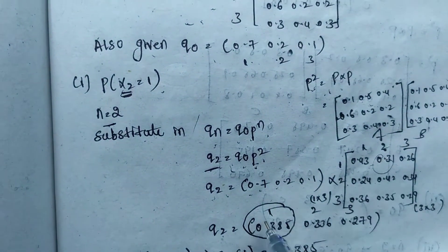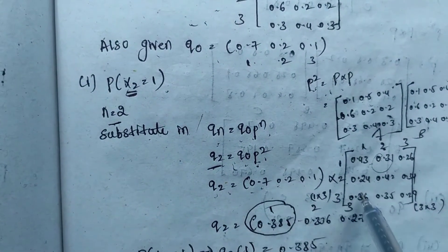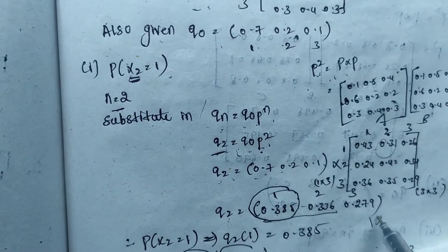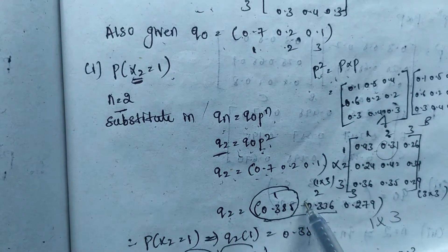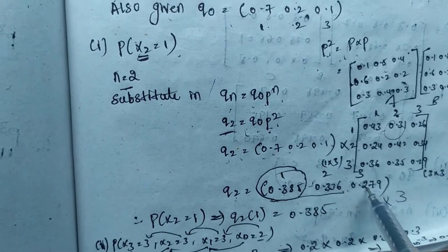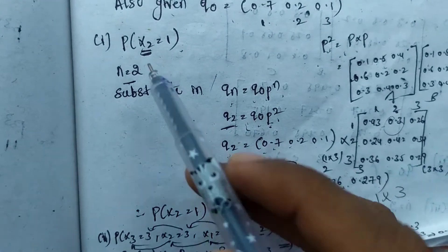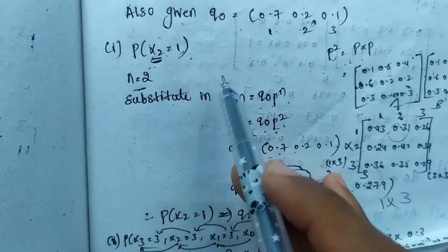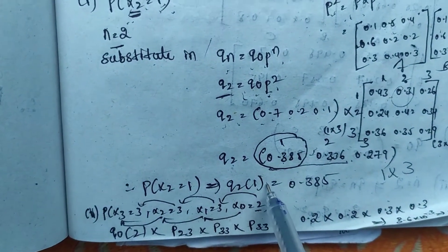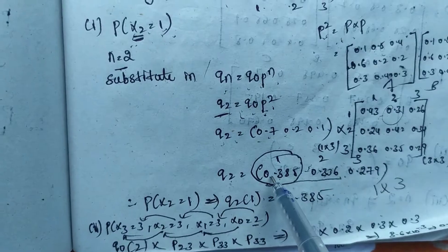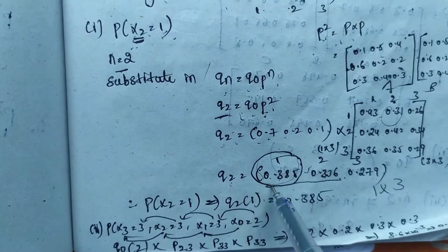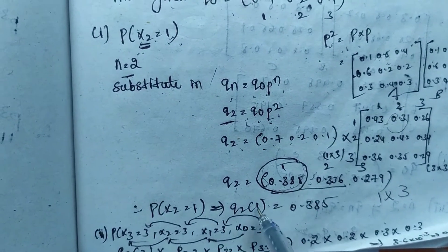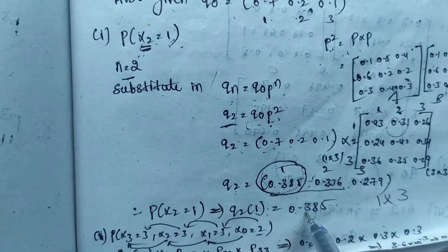After solving q(2) = q(0) * P², we get q(2) as a 1×3 matrix: [0.385, 0.336, 0.279]. We are asked for P(X2 = 1), which means q(2) of state 1 — that is the first element value, 0.385. Therefore q(2) of 1 equals 0.385.